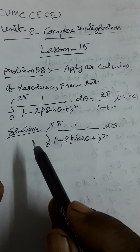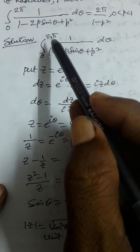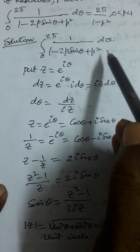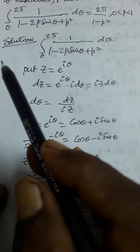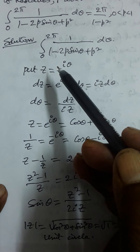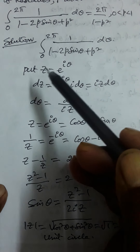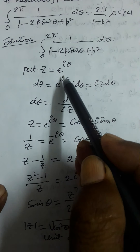Prove that the integral from 0 to 2π of 1/(1 − 2p sinθ + p²) dθ is equal to 2π/(1 − p²), where 0 < p < 1. Solution: consider the integral from 0 to 2π of 1/(1 − 2p sinθ + p²) dθ.